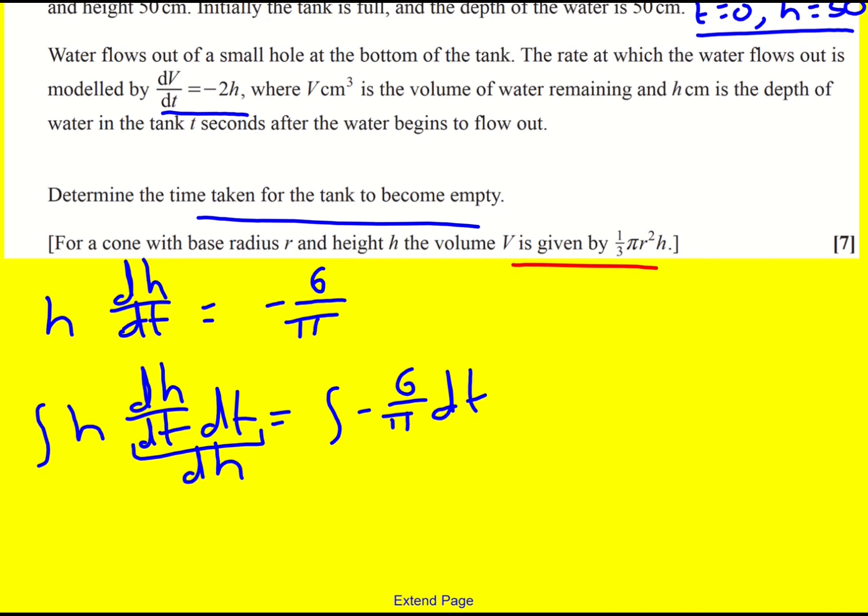Now you might be somebody who's been shown to instead times by dT and then just stick an integral sign around it. And that's fine. Many people do this. I just prefer to explain exactly why it works. In any case, we get the same answer here. So now I integrate. It's going to be a half H squared is equal to minus six - this is just a constant - so minus six over pi times T plus C.